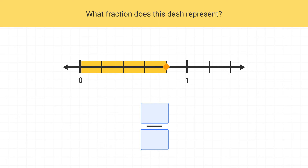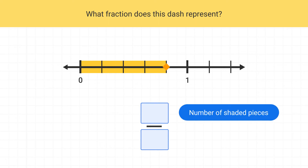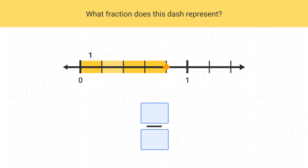Our numerator is the number of shaded pieces. We have one, two, three, four parts, so our numerator will be four.